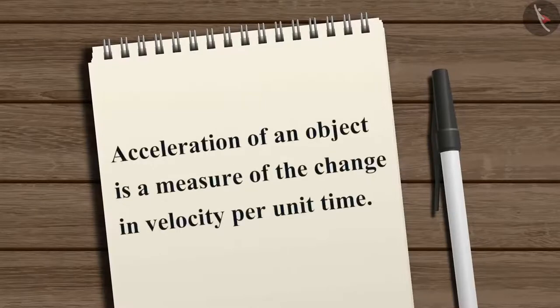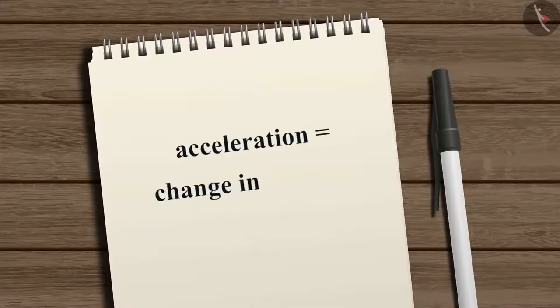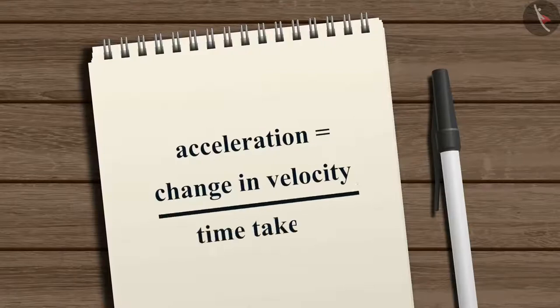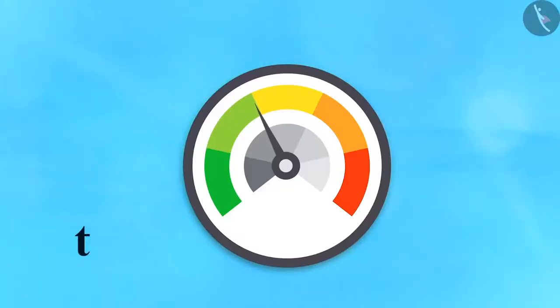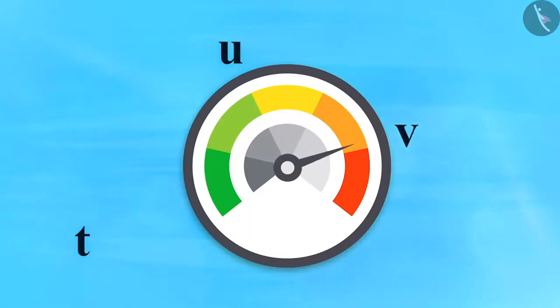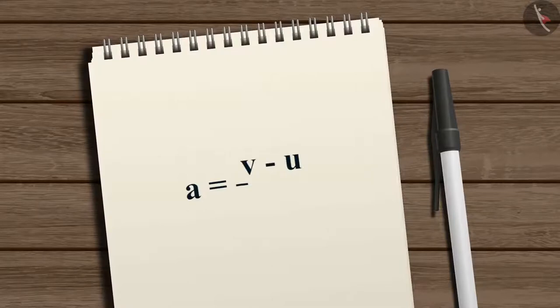To represent this rate of change of velocity, here comes another physical quantity known as acceleration. The acceleration of an object is a measure of the change in velocity per unit time. That is, acceleration equals change in velocity divided by the time taken. The SI unit of acceleration is meter per second squared. If the velocity of an object changes from an initial value u to the final value v in time t, the acceleration a is equal to (v minus u) divided by t.